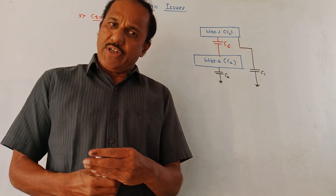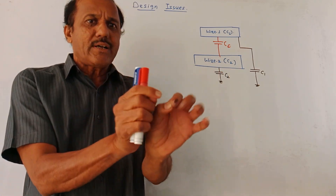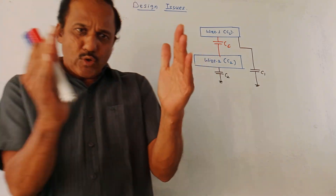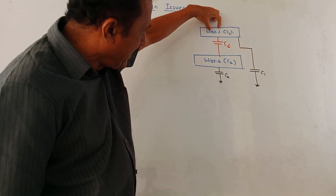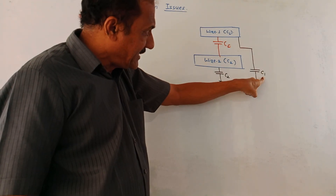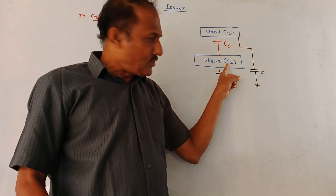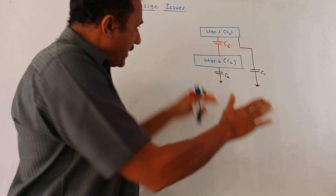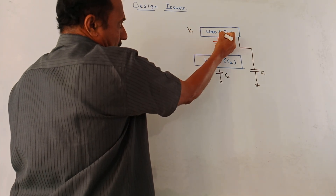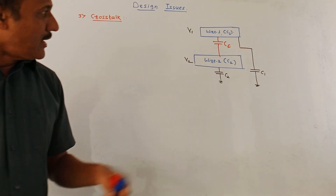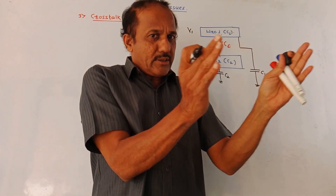The next topic is the crosstalk effect. This term crosstalk is related to any unwanted transmission of signal through the coupling capacitor. Coupling capacitors are used to connect two stages of a circuit. Consider two wires: wire 1 is associated with capacitor C1, and wire 2 is associated with capacitor C2. The voltage related to wire 1 is V1 and the voltage related to wire 2 is V2. If these two wires are used separately, the two capacitors are not interlinked with each other.